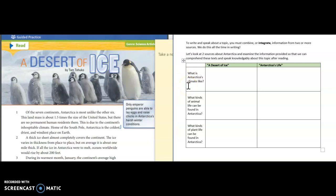So we have three guiding questions that we're going to focus on as we read both articles today. The first one is asking what the climate is like on this continent. The second question is asking us what kinds of animal life can be found in Antarctica. And then the third one wants to know what kinds of plant life can be found here. So again, those are our three guiding questions that we kind of want to keep in the back of our brain as we're reading.